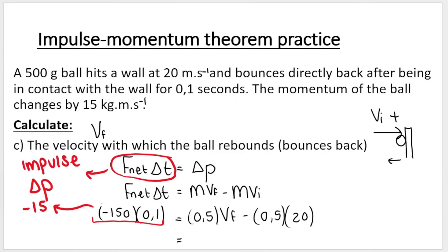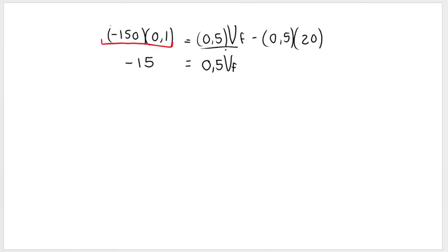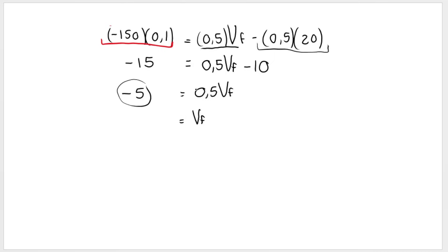A lot of students ask how to solve this — it's basic math but can go wrong. First, multiply the left-hand side terms to get negative 15. Then on the right side we have 0.5·VF minus 0.5 multiplied by 20, which gives negative 10. Take the negative 10 over by adding 10 to both sides. Then to isolate VF: negative 5 divided by 0.5 gives me negative 10. In physics, the negative just tells me about direction. So the final velocity is 10 meters per second in the negative direction — away from the wall.